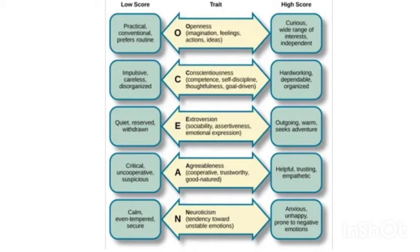Next is E — Extroversion. We have seen the theory of extrovert and introvert before. A person with a high E score would be outgoing, warm, and seeks adventure. Whereas a person with a low E score would be the opposite — quite reserved and withdrawn.